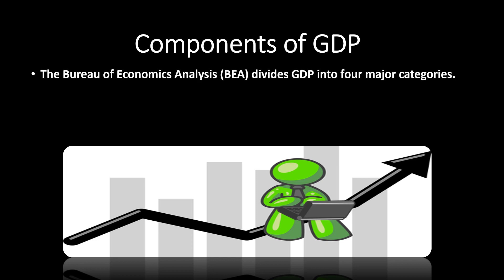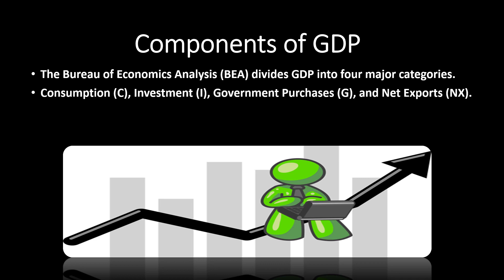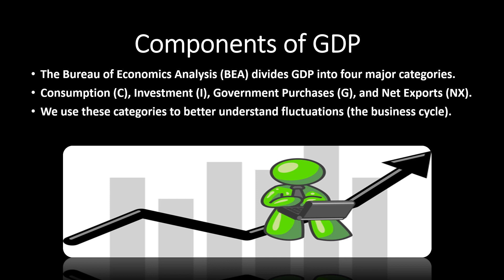The BEA — the Bureau of Economic Analysis — divides GDP into four major categories: consumption, investment, government purchases, and net exports, as you can see here. The reason we do this is so we can better understand the fluctuations in the business cycle, which we've just started talking about.